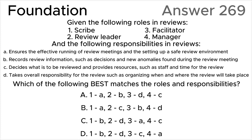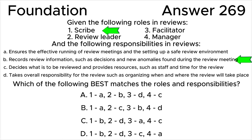Let's look at all the roles in reviews from one to four according to the ISTQB syllabus. Role one — scribe or recorder — is responsible for gathering feedback from reviewers and documenting review information, such as decisions made and any new anomalies identified during the review meeting. Scribe corresponds to option B: records review information, such as decisions and new anomalies found during the review meeting.